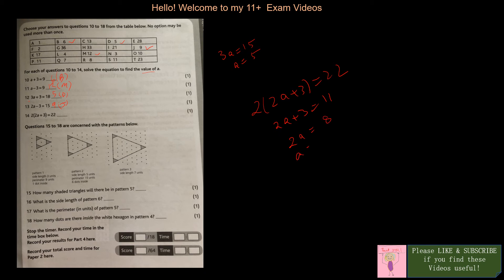2a minus 3 is 15, so 2a is 18, so a is 9. 9 is given here, J. Then 2 times 2a plus 3 is 22, so 2a plus 3 is 22 divided by 2, that's 11. 2a is 8, so a is 4. That means L.